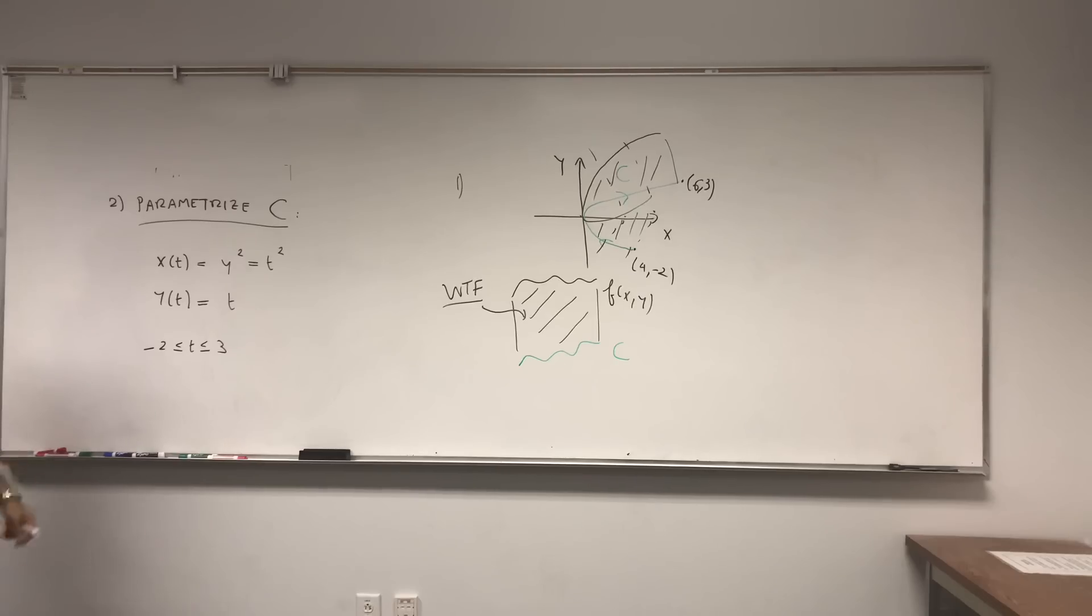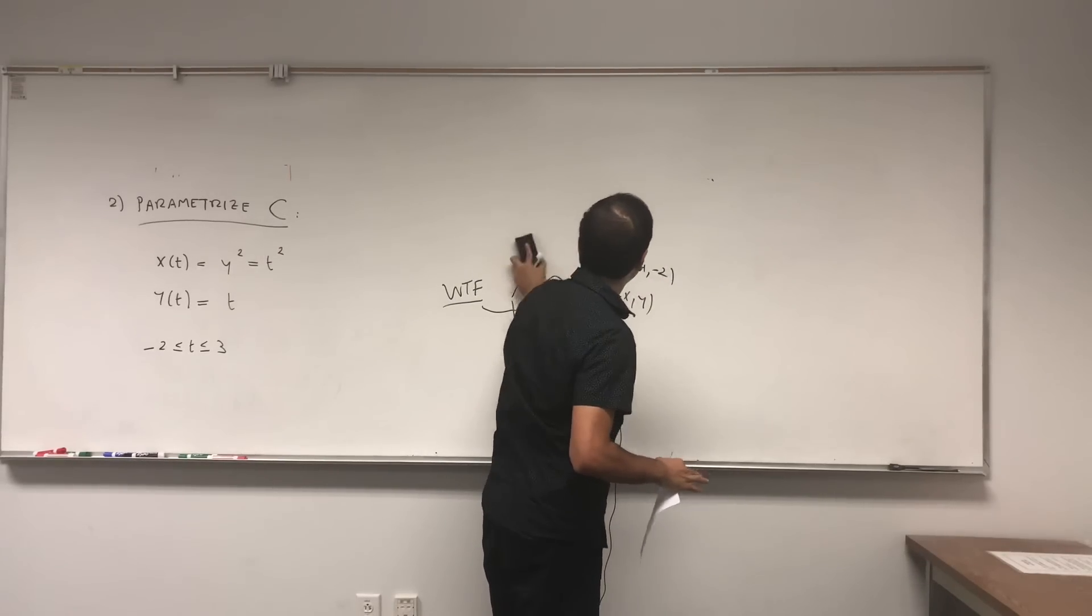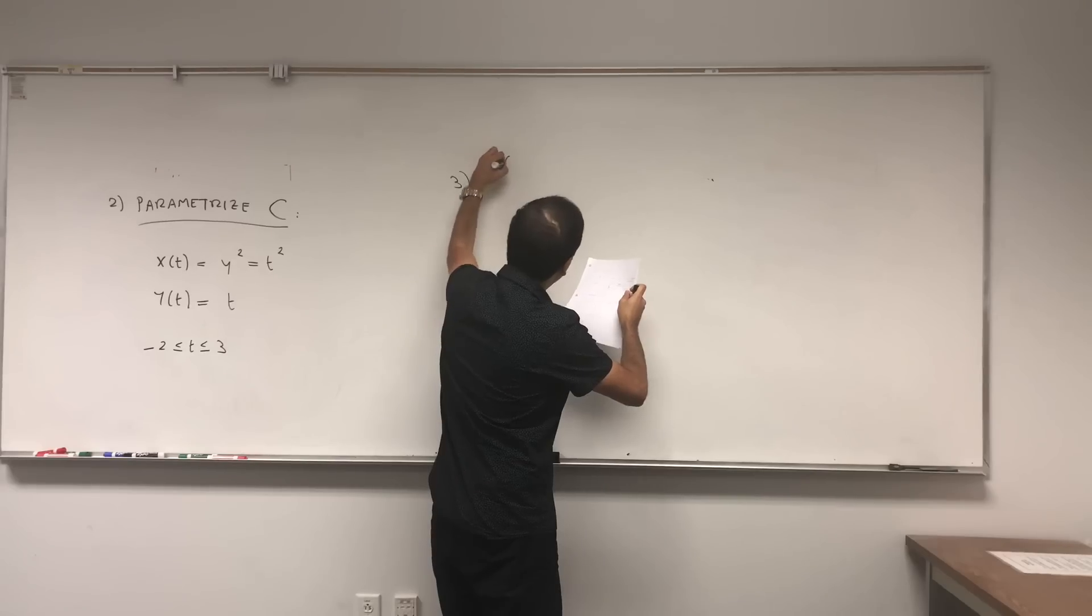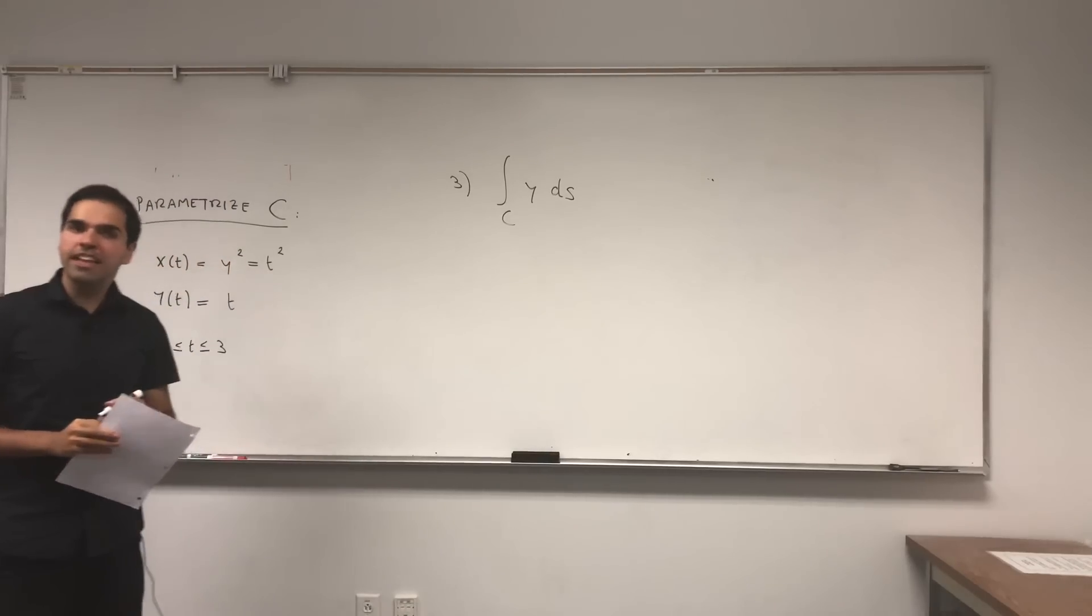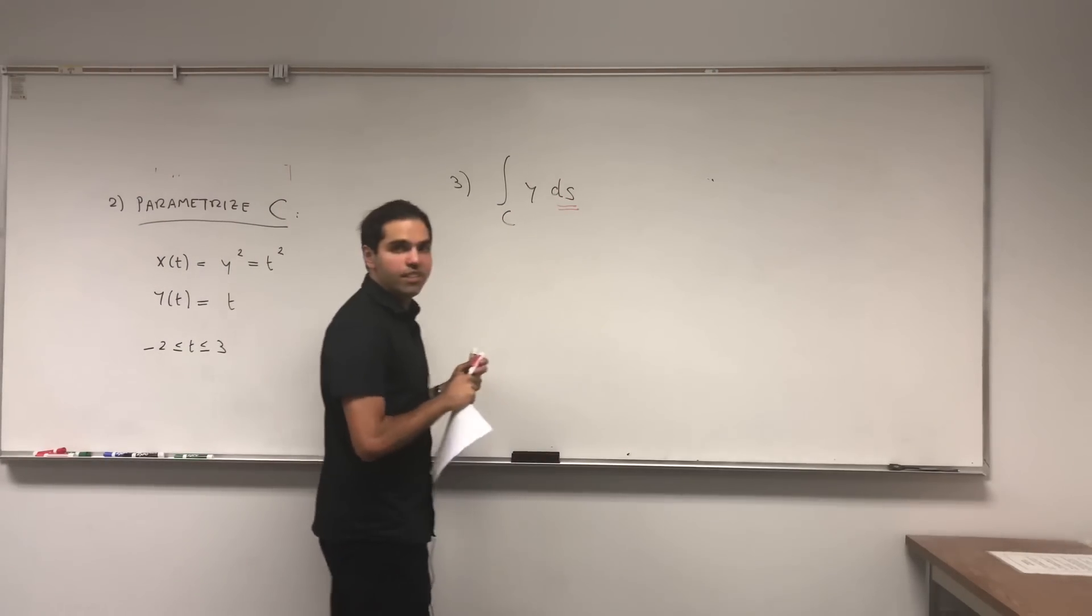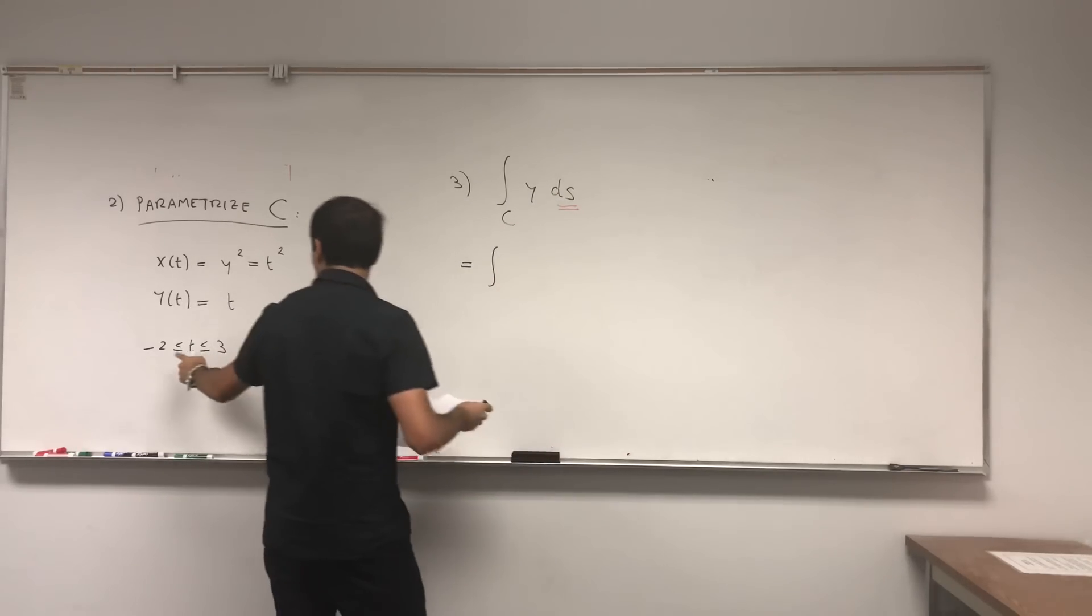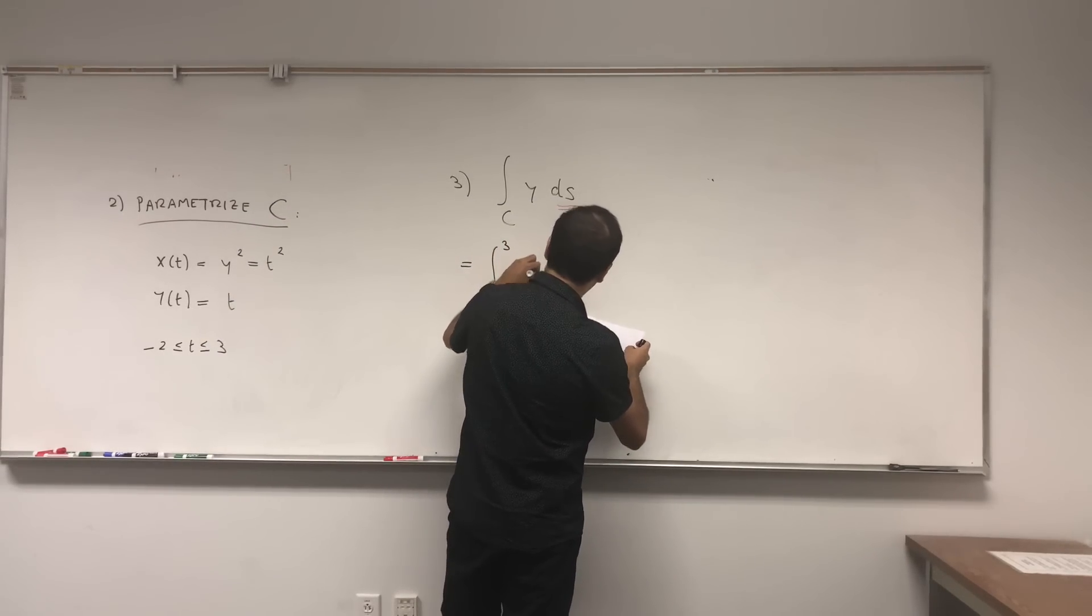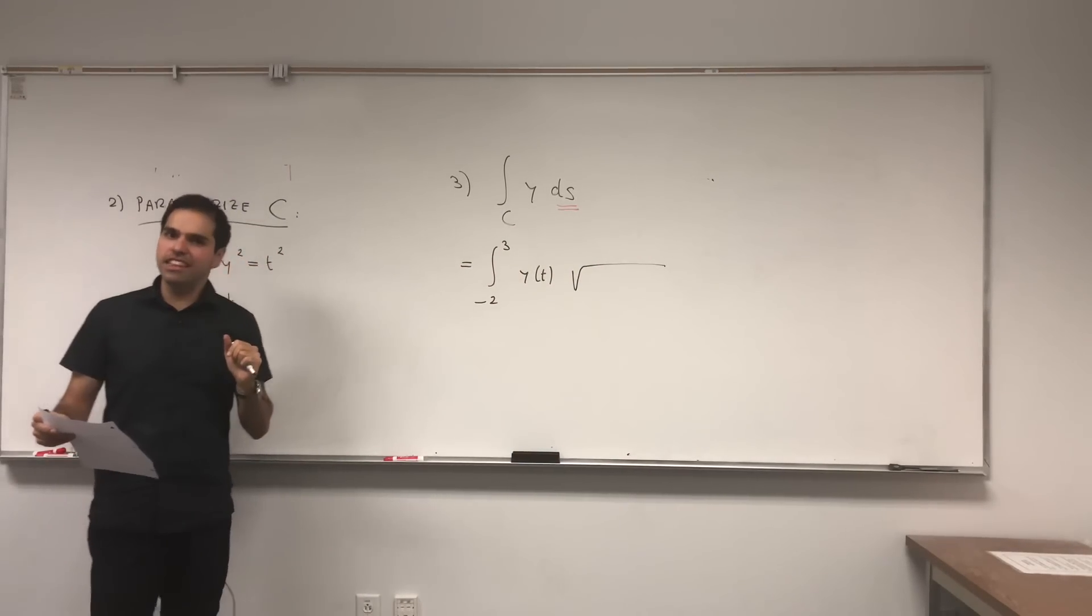And once you have a parametrization, you just need to plug into that definition. So now we don't need our picture anymore. So the line integral of Y dS, and let me give you the formula now, and in a second I will tell you how to get it. And it turns out dS, it's the thing that gives it away what that means. It's really the line integral from the starting point to the ending point, so minus 2 to 3, y of t, and dS I'll explain in a second is like a little diagonal.